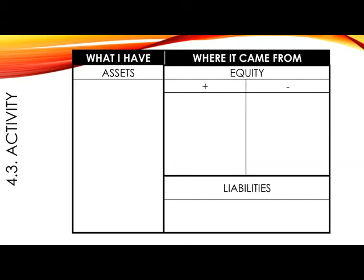Your accounting equation has assets on the one side, which represents the things that the business has to use to generate an income, and on the other side, where the money came from in order to buy those assets. In other words, either from the owner, known as equity, or borrowed, known as liabilities.